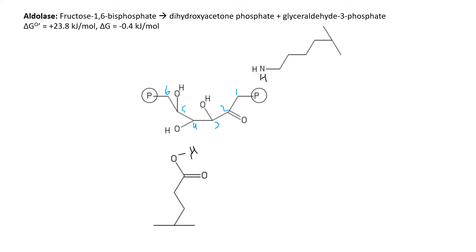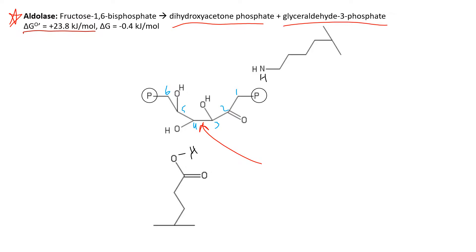The next step in glycolysis is catalyzed by the enzyme aldolase, which breaks fructose 1,6-bisphosphate into two 3-carbon units: dihydroxyacetone phosphate and glyceraldehyde-3-phosphate. The standard free energy change for this reaction is actually quite large and positive, and that's mostly due to enthalpy. It just takes a lot of energy to break this carbon-carbon bond between carbon-4 and carbon-3 of fructose 1,6-bisphosphate.